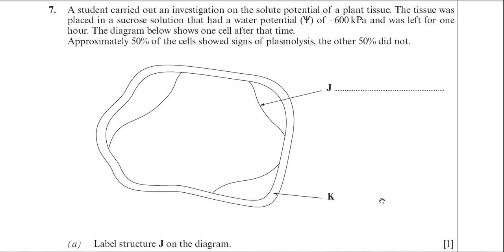Part A is just asking you to label structure J on the diagram. Structure J is actually the cell membrane — you can call it the plasma membrane if you wish. You can actually see it pulling away from the cell wall. Label K is actually the cell wall. So if you weren't able to identify the features in that plant cell, you would also find the question difficult, because the appearance of that cell is also an aid to understanding and answering the question. The answer for label J is the cell membrane.